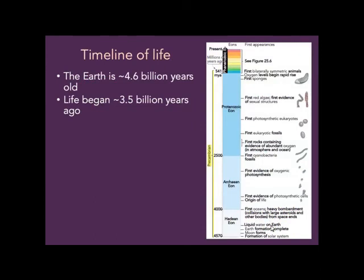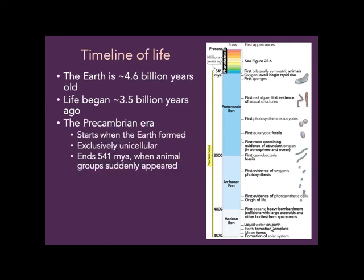The Earth is 4.6 billion years old, and the first evidence of life on Earth is from about 3.5 billion years ago. We consider the period from the formation of the solar system until animal groups appeared as the Precambrian era. The Precambrian ends at 541 million years ago. Before that, everything was unicellular, and in the first 2 billion years there was no oxygen in the atmosphere or water — all the oxygen was produced by photosynthetic bacteria.